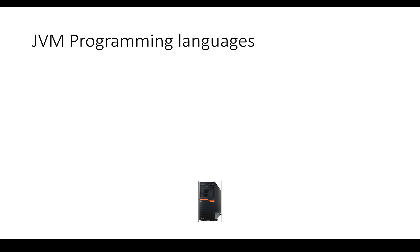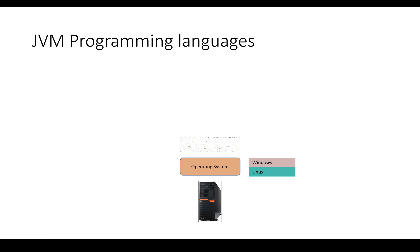Once we have a server, the first thing we'll do is set up an operating system such as Windows, Linux, or whatever you want to use for your applications to run. On top of it we need to have JVM, and typically it will be different for each OS.